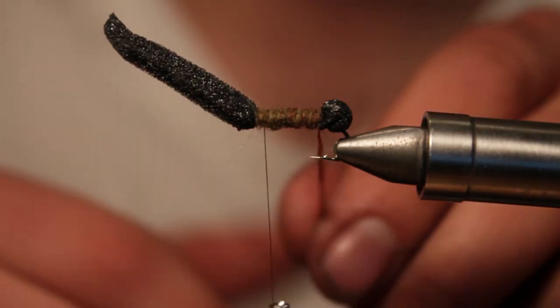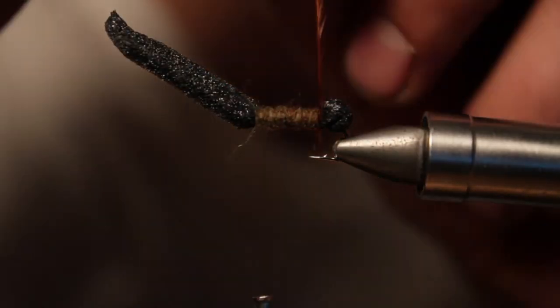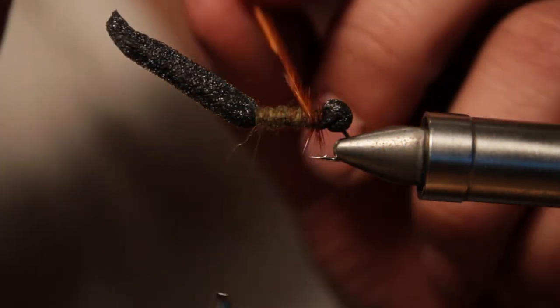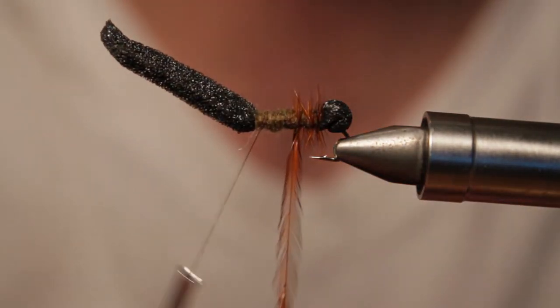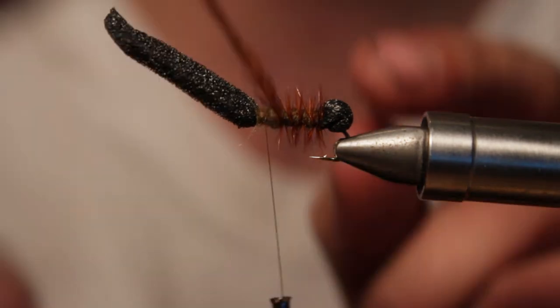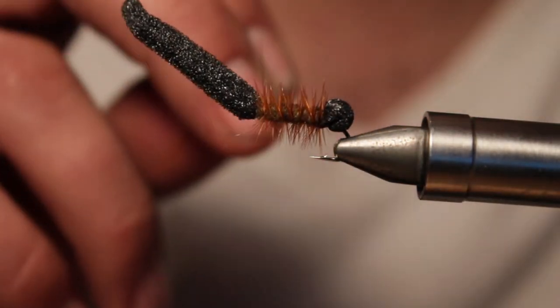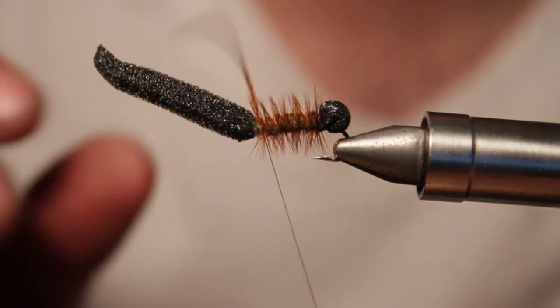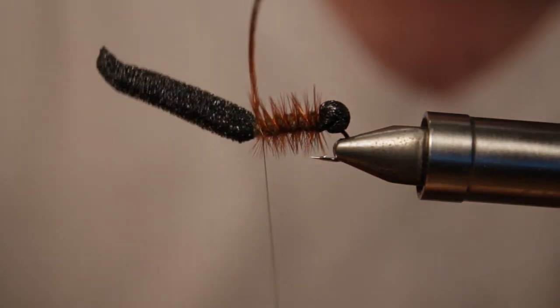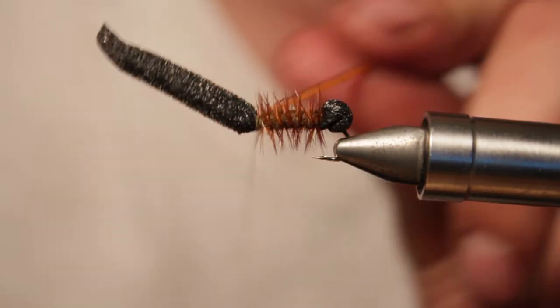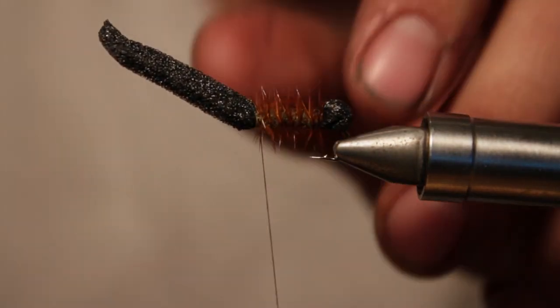And then we're going to take our hackle and we're going to wind our hackle, kind of like any of you would wind hackle on like a bugger, just open spirals until we reach the front of the hook. And then you can tie that off.